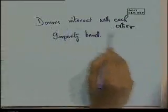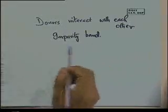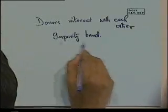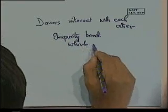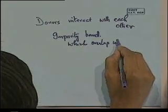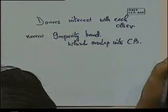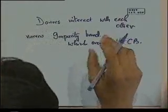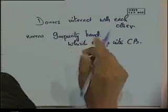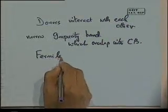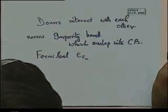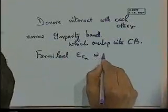We now have a set of closely spaced levels approximated by a band. Instead of the single donor level, we have a band created by the impurities that overlaps into the conduction band. It's a fairly narrow band, close to the conduction band edge, but it overlaps into the conduction band. This means the Fermi level E_FN is located inside the conduction band — similar to metals where the Fermi level is inside a partially filled band.